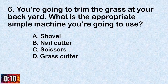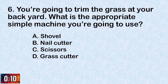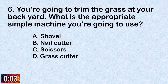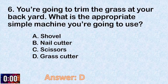Number six: You're going to trim the grass at your backyard. What is the appropriate simple machine you're going to use? A. Shovel. B. Nail cutter. C. Scissors. D. Grass cutter. The correct answer is letter D, grass cutter.